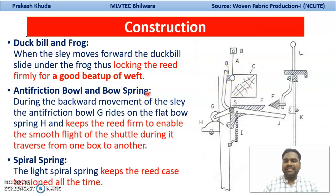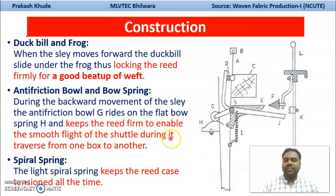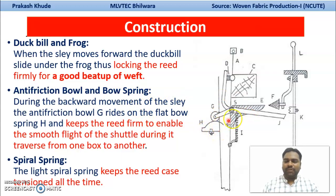The anti-friction bowl and bow spring are basically important when the slay is moving backward. During the backward movement, there is a transfer of your shuttle from one shuttle box to the other shuttle box. During that passage of your shuttle, the reed should be firm because the shuttle has contact with the reed, and there should be a smooth flight of your shuttle during that movement. The anti-friction bowl handles this. The spiral spring is normally required to keep this reed under tension at all times, maintaining the normal pressure needed for the reed to be firm.